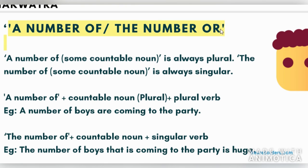Now there is the case of 'a number of' versus 'the number of.' With 'a number of,' we always use a plural verb, because 'a number of' is not specific. With 'the number of,' it refers to something specific, so it takes a singular verb. For example, 'The number of boys that is coming to the party is huge' — here we use singular.